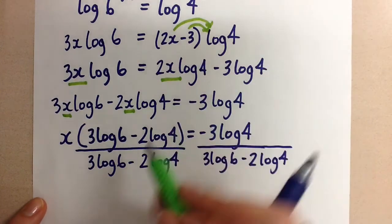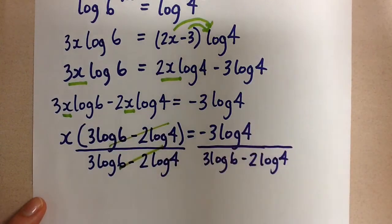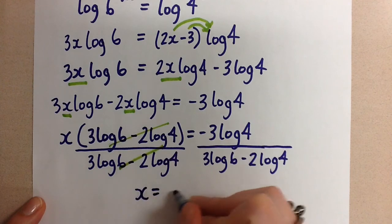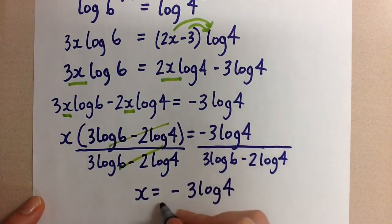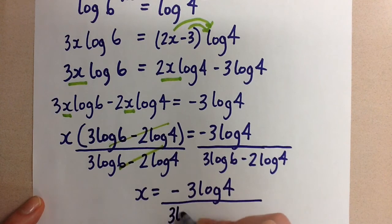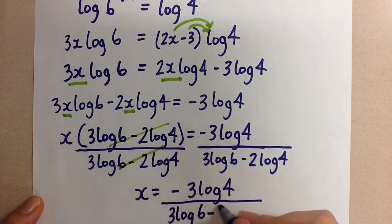So now these cancel of course. And on my left-hand side I'm left with x equals negative 3 log 4 divided by 3 log 6 minus 2 log 4.